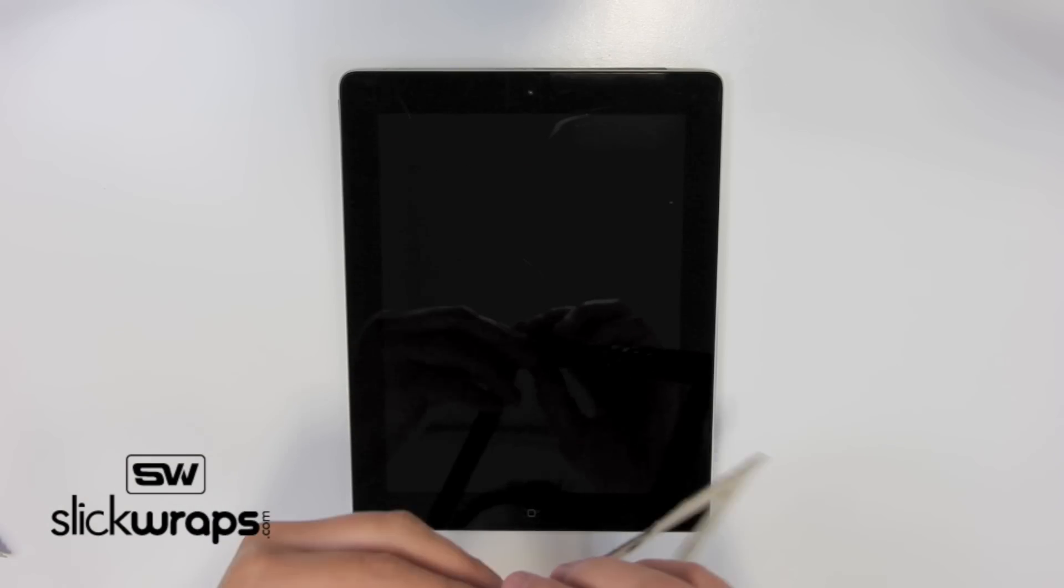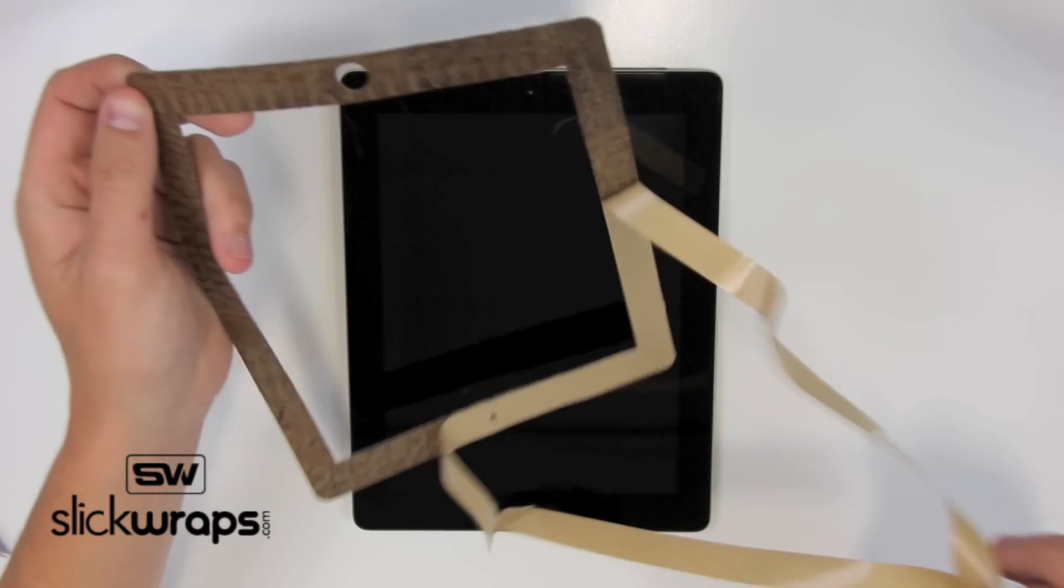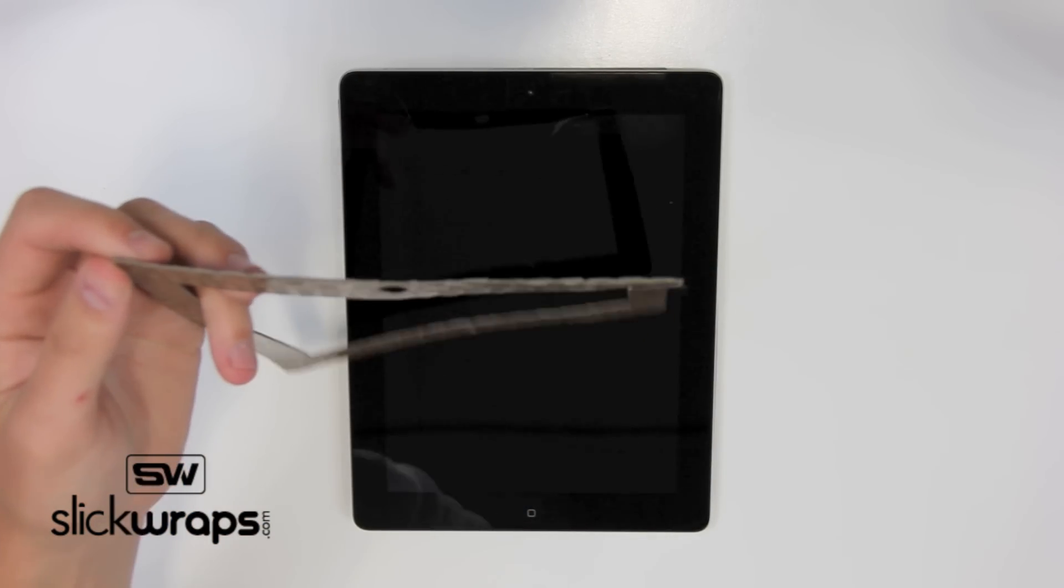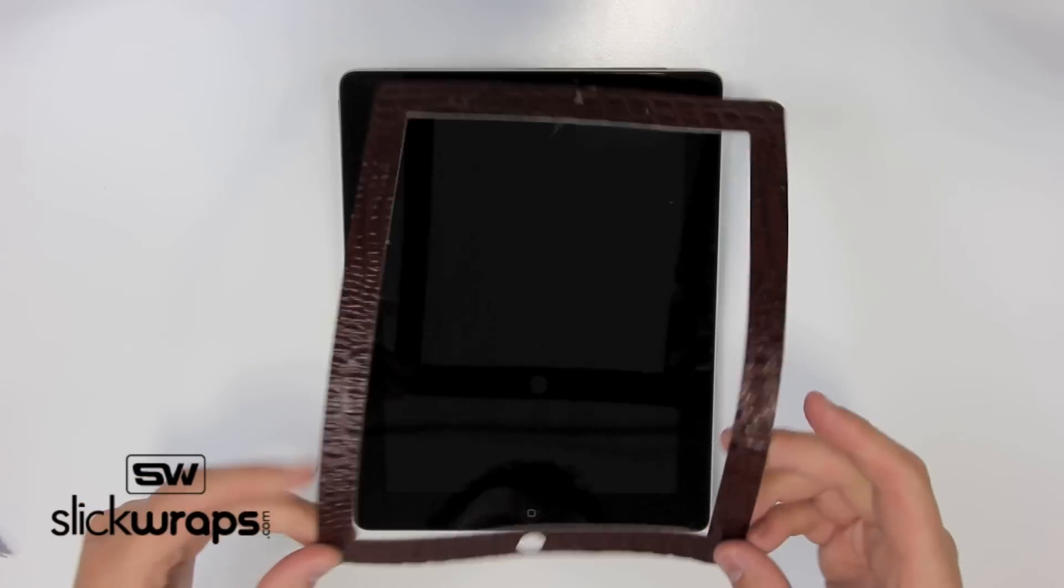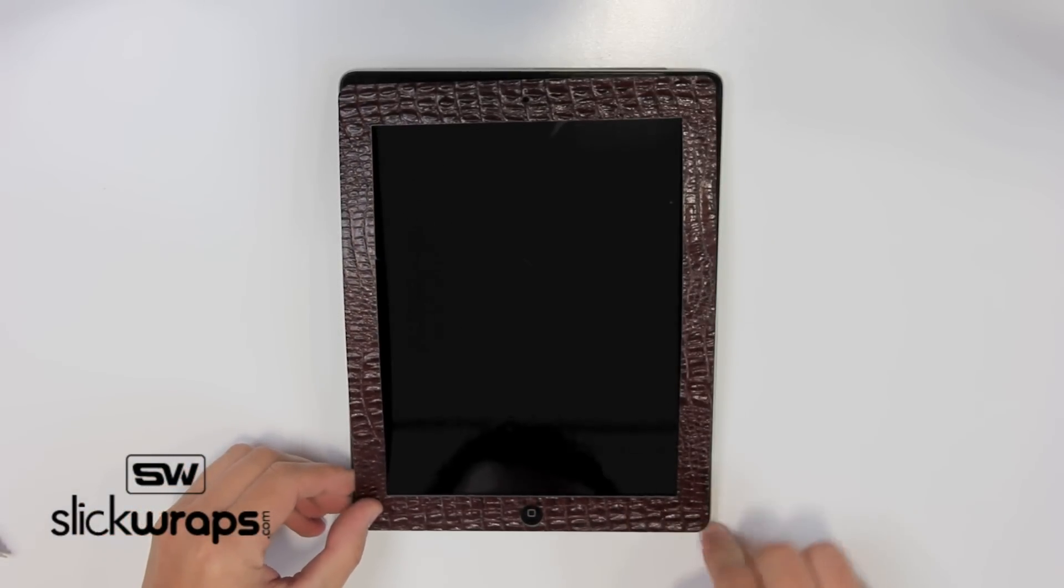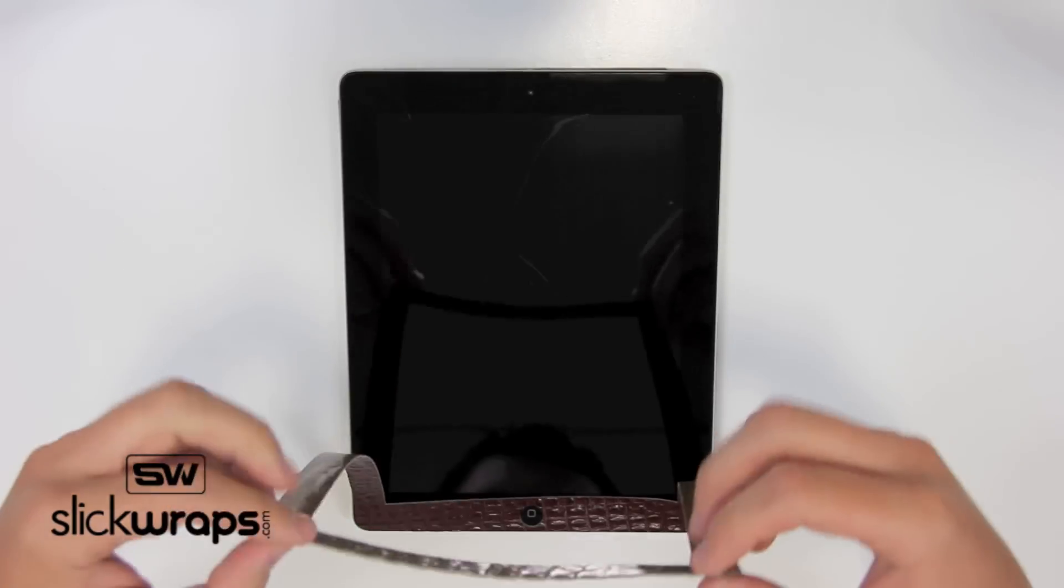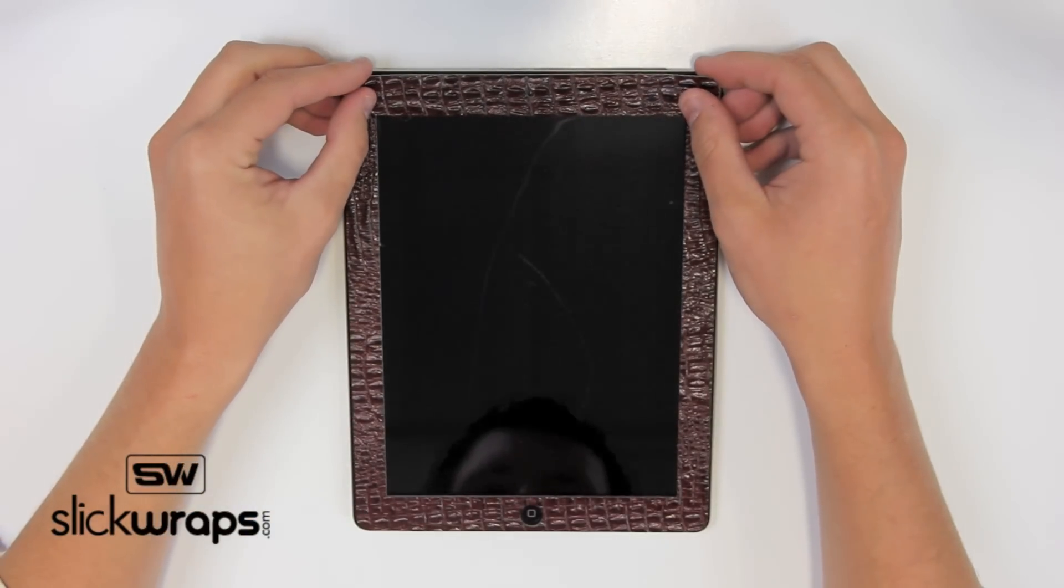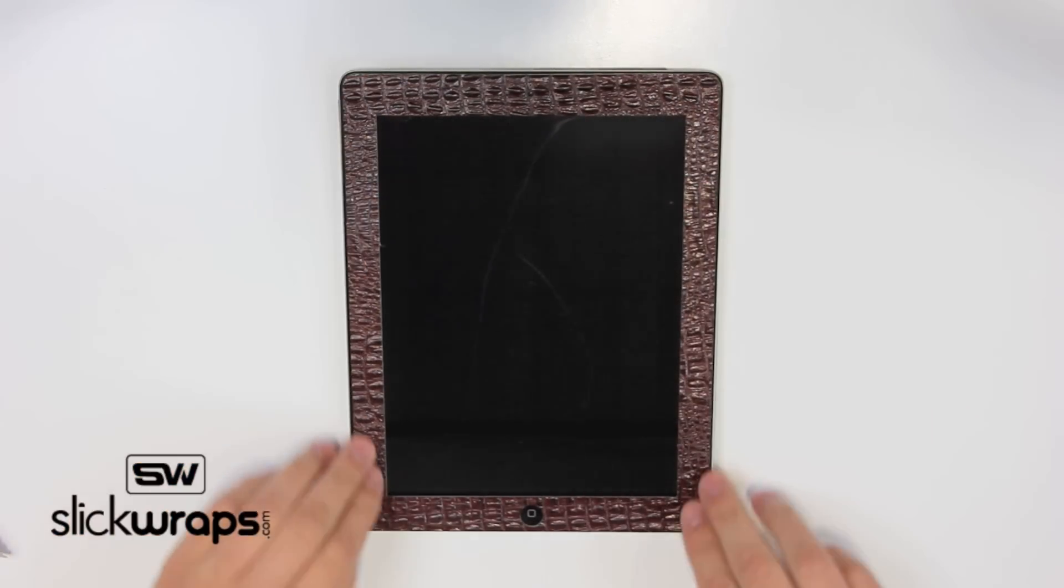Now you're ready for installation. Take off the paper backing carefully exposing the adhesive. Now line up the home button and gently push down. Next, line up the camera hole and gently push around the edges.